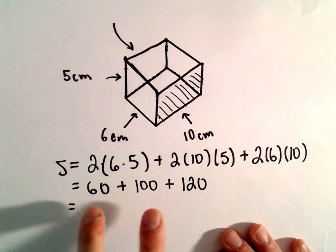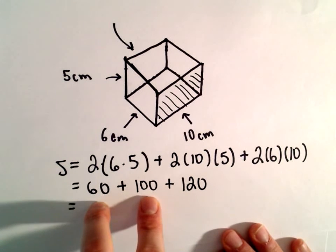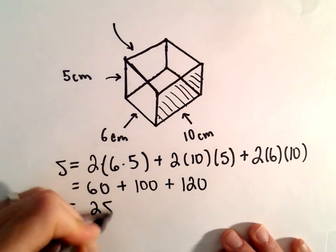And if we add those together, one sixty, sixty and one hundred will be one sixty, one sixty and one twenty will be two eighty.